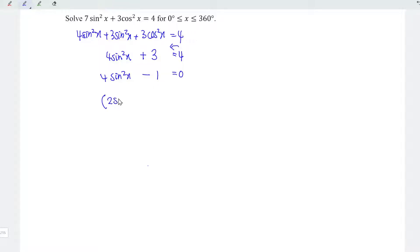Let's factorize. So we have 2 sin x minus 1 times 2 sin x plus 1 is equal to 0. So we're supposed to have two sets of solutions. Firstly, 2 sin x minus 1 is equal to 0, or the second set of solutions, 2 sin x plus 1 is equal to 0.